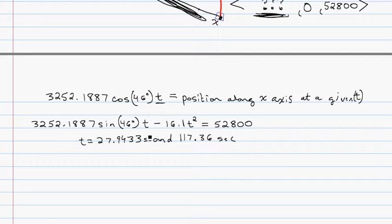So, what does this mean? Well, this first t that we get, 27.9433, this is obviously when it hits 10 miles in the air on its way up, somewhere along here. The second t is the one that is important to us. That's on its way back down. That's when we want to hit it. We want to hit it at 10 miles in the air on its way down.